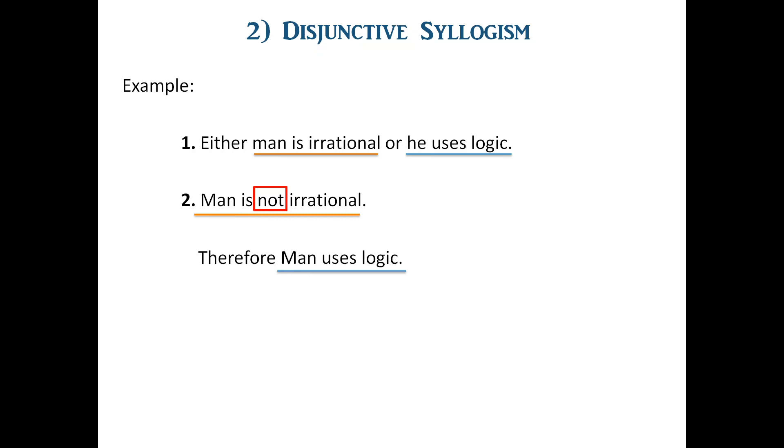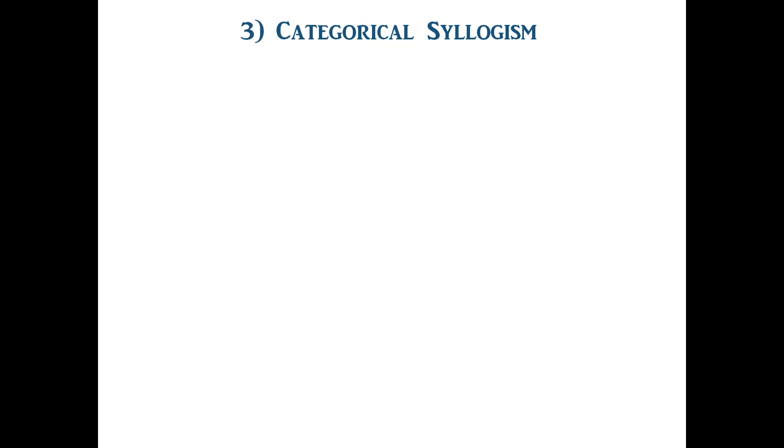Now we come to the third type of syllogism, that is categorical syllogism. Categorical syllogism is defined as a deductive argument consisting of three categorical propositions that together contain exactly three terms, each of which occurs in exactly two of the constituent propositions.